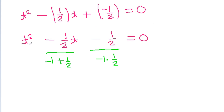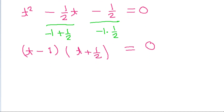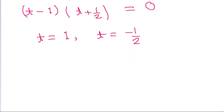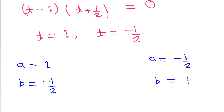The factors of this quadratic equation will be t minus 1 into t plus 1 by 2 is equal to 0. So we get t is equal to 1 and t is equal to minus 1 by 2. From here, we get either a is equal to 1 and b is equal to minus 1 by 2, or a is equal to minus 1 by 2 and b is equal to 1.